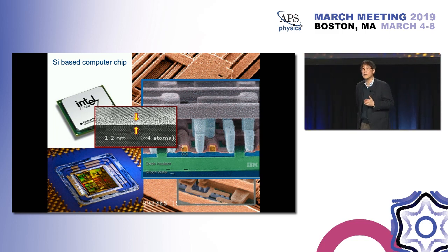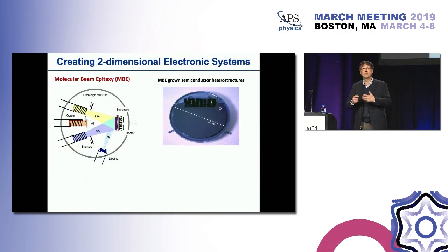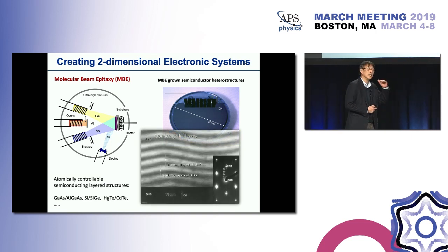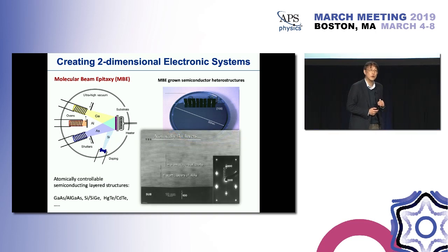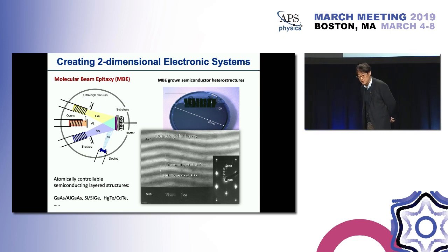Over the past half-century, semiconductor technologies evolved to produce these kinds of materials in a really layer-by-layer fashion. Modern MBE can produce heterostructures with almost atomic-layer control over wider ranges. This has become a technologically relevant system already being used in many consumer electronics.